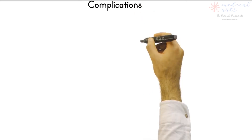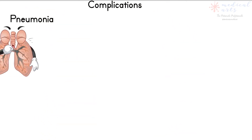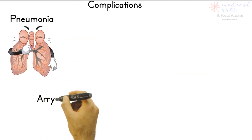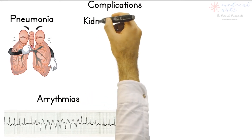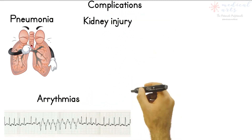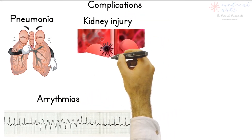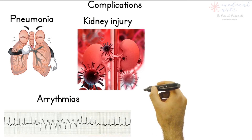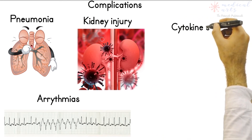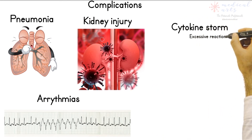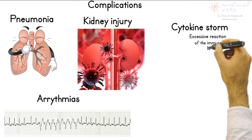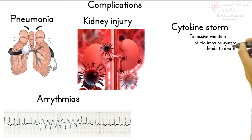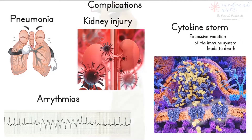Complications of COVID-19 have included pneumonia, acute respiratory distress syndrome (ARDS), cardiac injury, cardiac arrhythmias, septic shock, liver dysfunction, acute kidney injury, multi-organ failure, and cytokine storm, which is often the cause of death in COVID-19 disease.